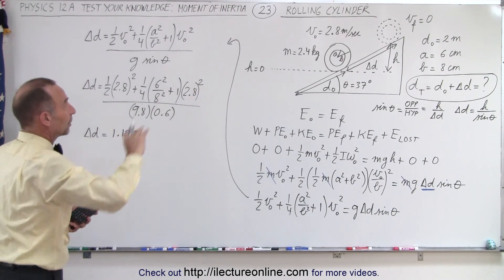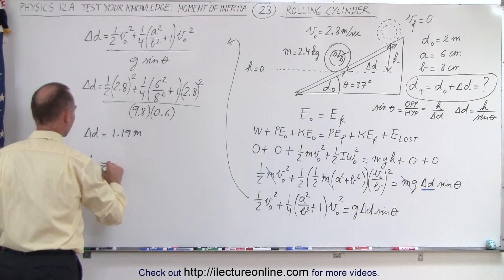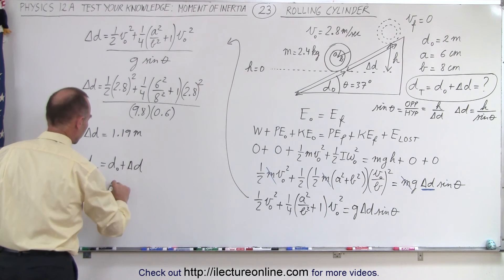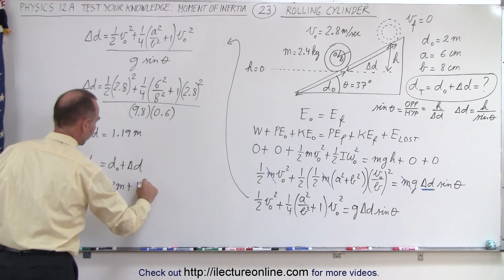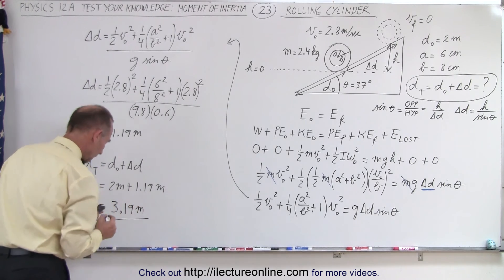So delta d is going to be equal to 1.19 meters. Now, that means that the total distance travel of the incline, starting from the very bottom, so d total is equal to d initial plus delta d. In this case, that's going to be 2 meters plus 1.19 meters. So the cylinder travels a total of 3.19 meters up the incline.